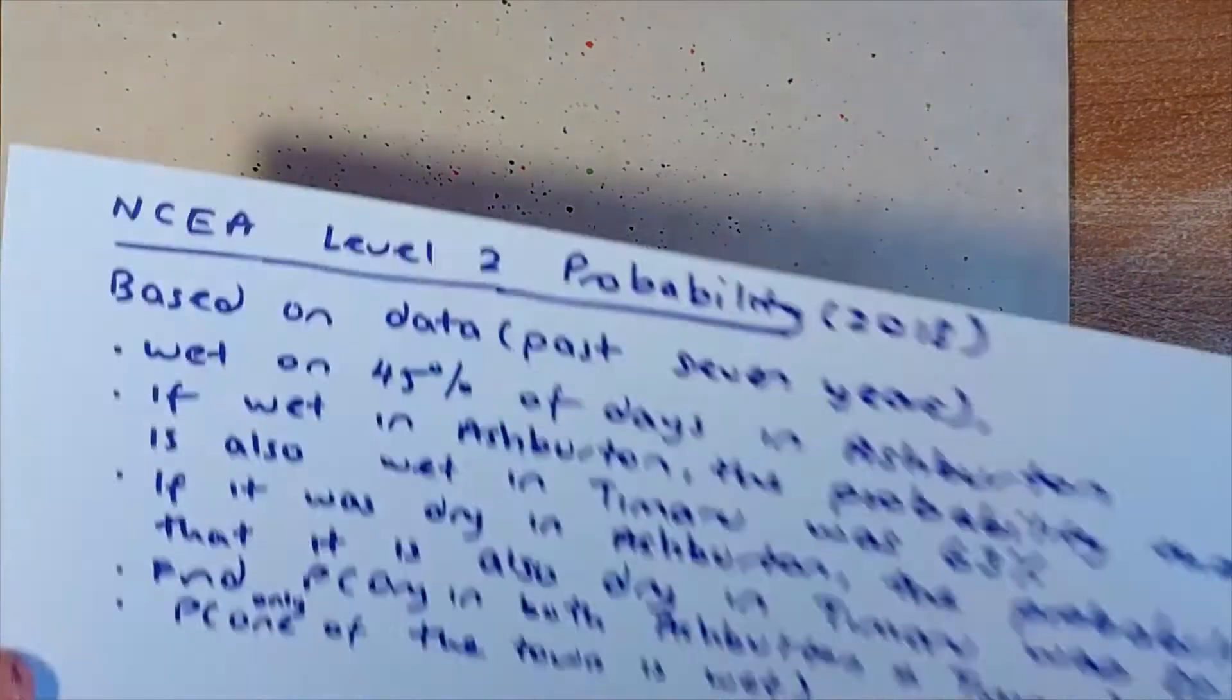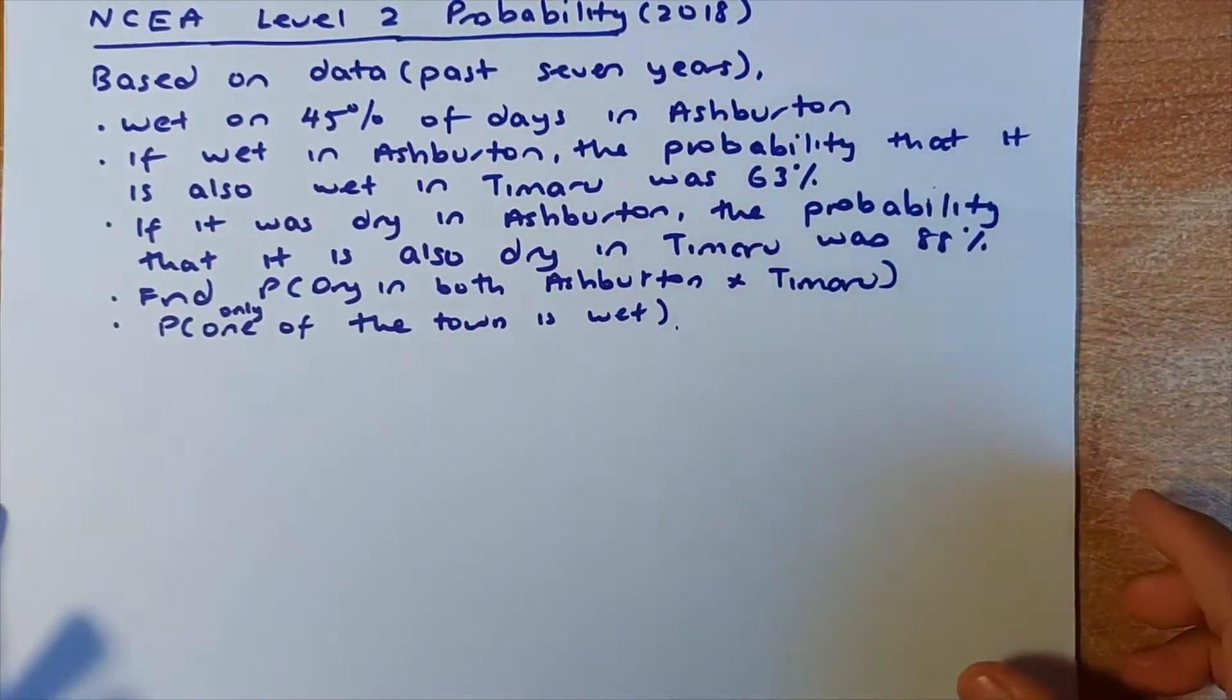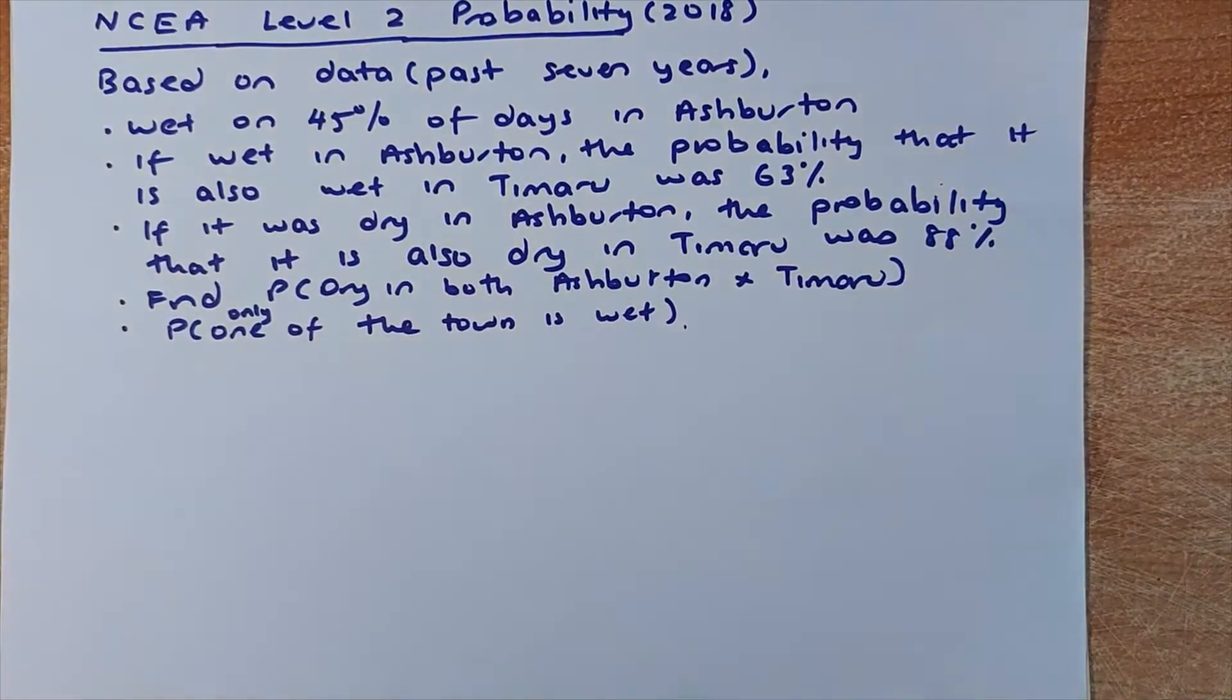We shall look at one of the two questions from the NCEA Level 2. The question sounds like this. Based on the data in the past 7 years, it's wet on 45% of the days in Ashburton. If it is wet in Ashburton, the probability that it's also wet in Timaru was 63%. If it was dry in Ashburton, the probability that it's also dry in Timaru will be 88%.